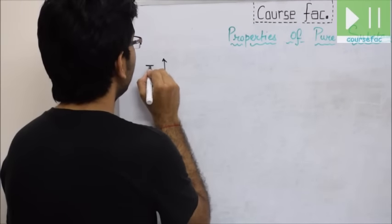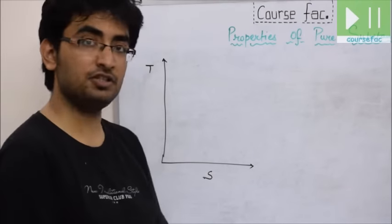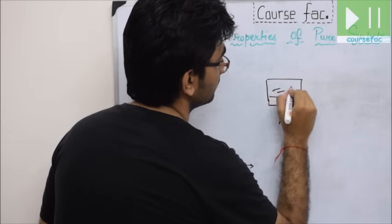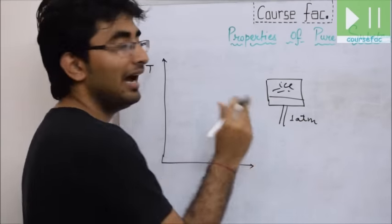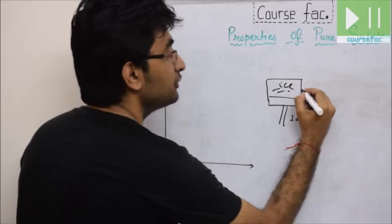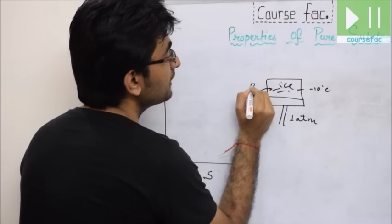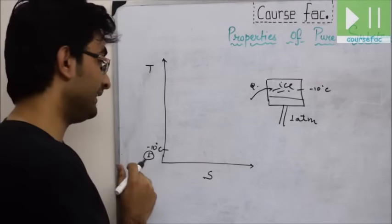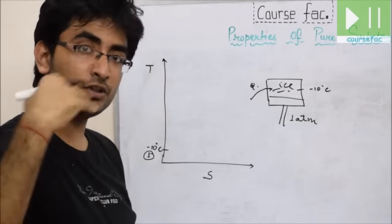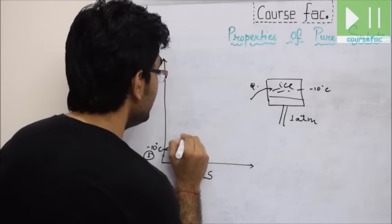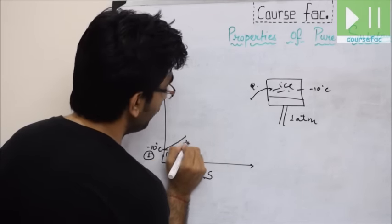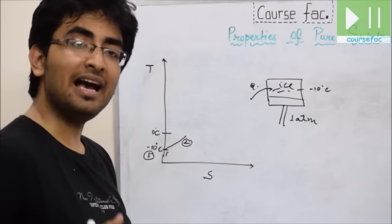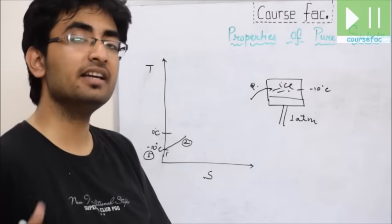In the TS diagram, T is on the y-axis and S (entropy) is on the x-axis. We consider ice enclosed in a piston maintaining a constant pressure of 1 atm. Ice is initially at minus 10 degrees Celsius — this is point 1. We heat the ice from minus 10°C to 0°C, reaching point 2. At point 2, a phase change occurs: ice at 0°C gets converted into water at 0°C at constant temperature and pressure.